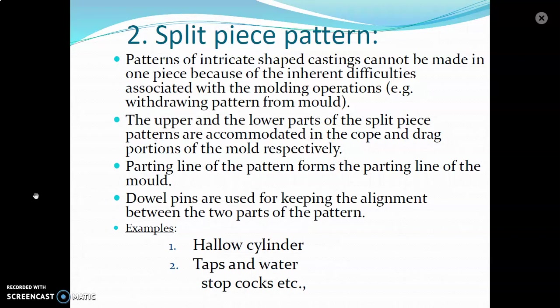The second type is the split piece pattern. Patterns of intricate shape casting cannot be made in one piece because of the inherent difficulty associated with the molding operation. For example, upper and lower parts of a shape — suppose we have different parts and we want to remove that part from the mold; it is very difficult. In that case, we make two or three parts, assemble them, and after making the mold we remove them one by one to clear the cavity. This makes it very easy.